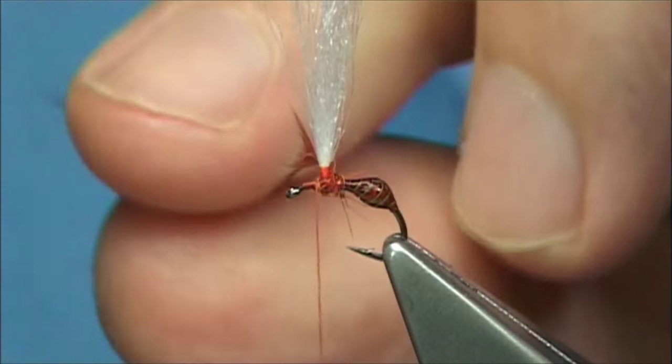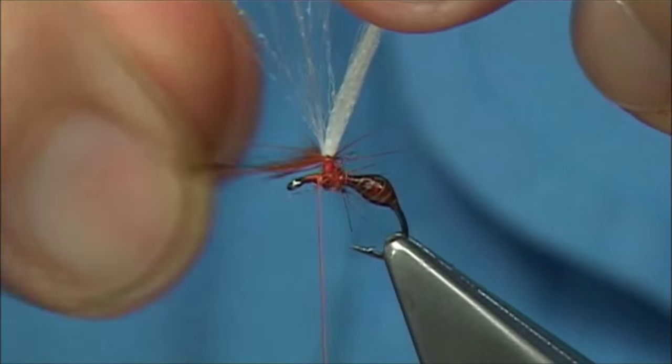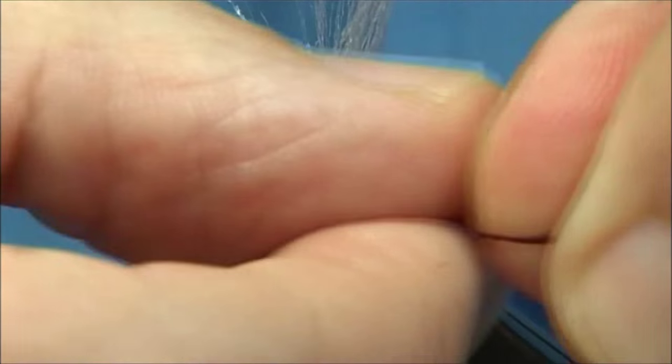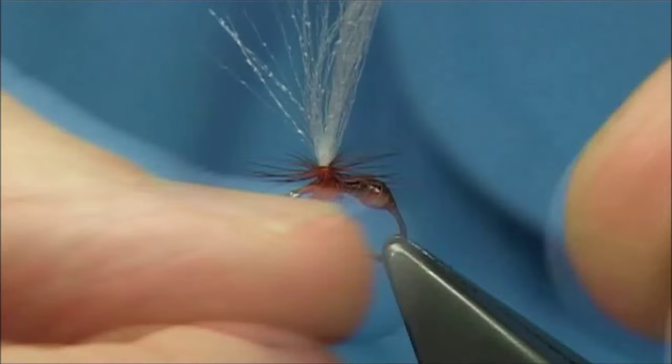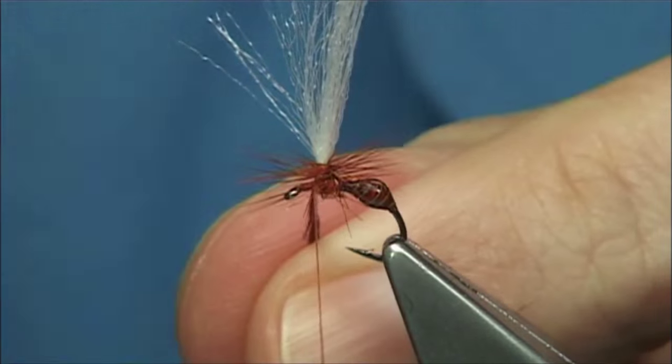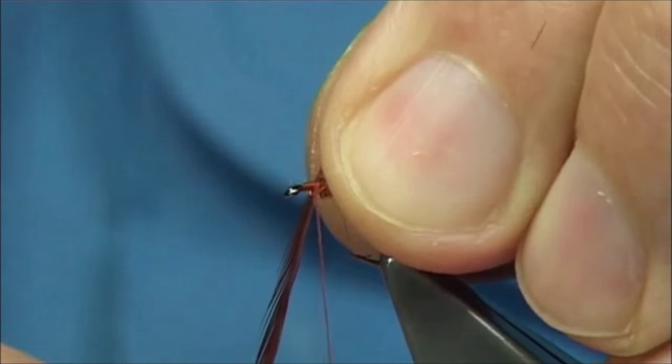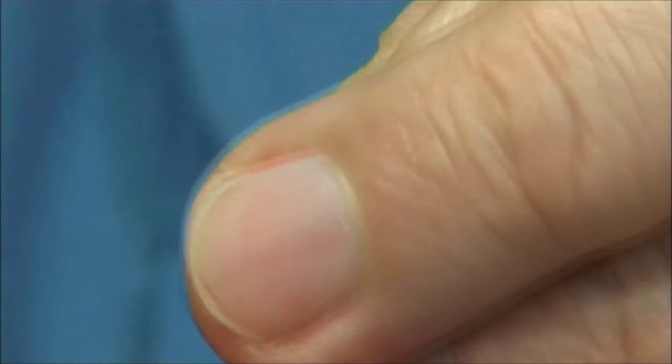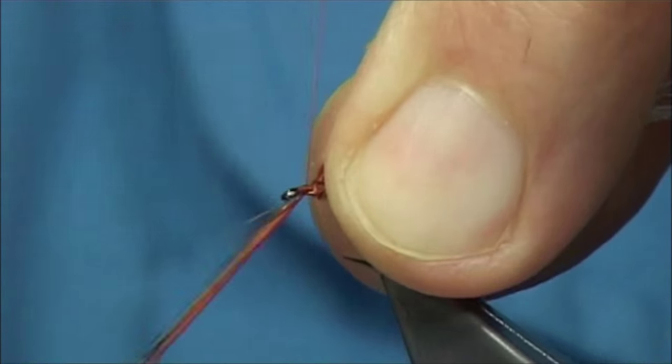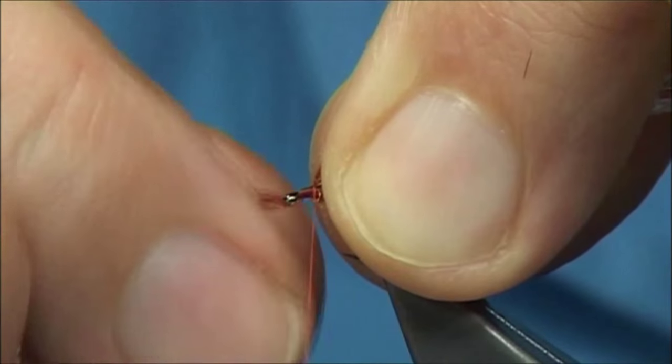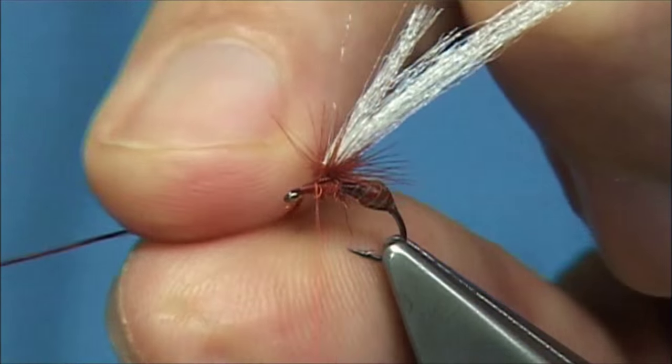You want to wind your hackle, one turn. Next one should be underneath that, and again, until you've got enough hackle there. Should be fine. You can follow it around with the thread, or the quickest way for me is just to pull back the fibers out of the way. I usually hold the tip of the hackle with my fingers on my left hand, and then come in tight, as tight as you can. Then you can trim this away.